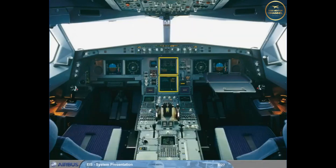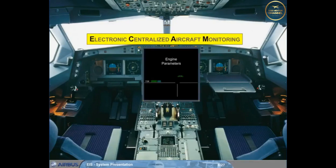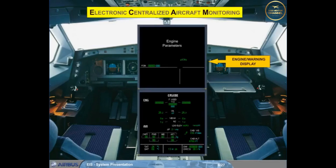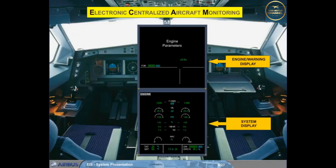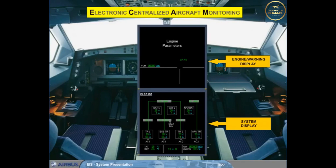The two displays in the center are dedicated to the Electronic Centralized Aircraft Monitoring System, E-CAM. The upper E-CAM display is called the Engine Warning Display. The lower E-CAM display is called the System Display. Various aircraft system parameters can be viewed on these screens. As an example, you can see a sequence of all SD pages, one after the other.